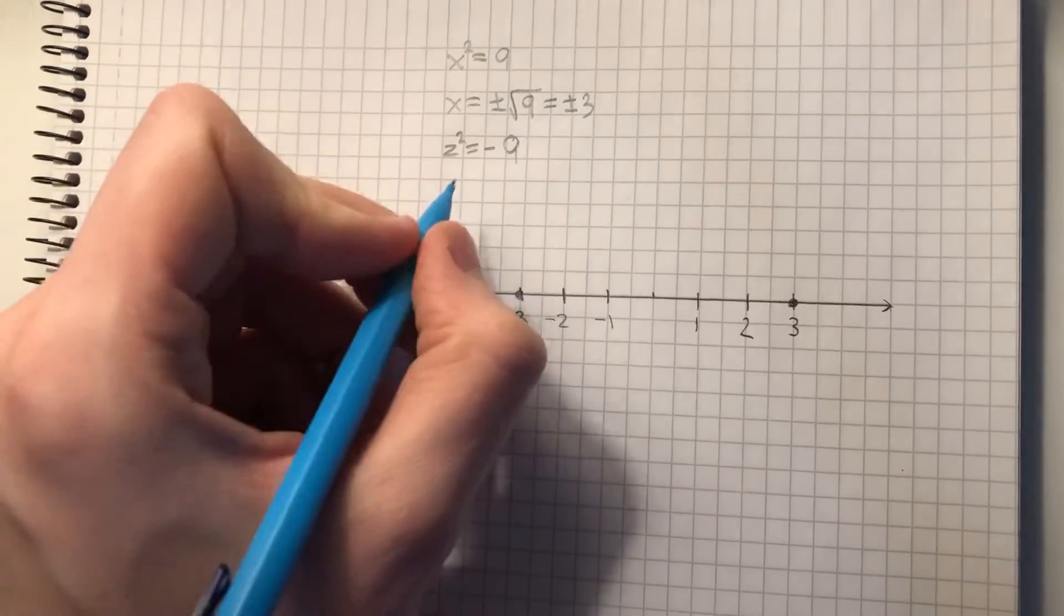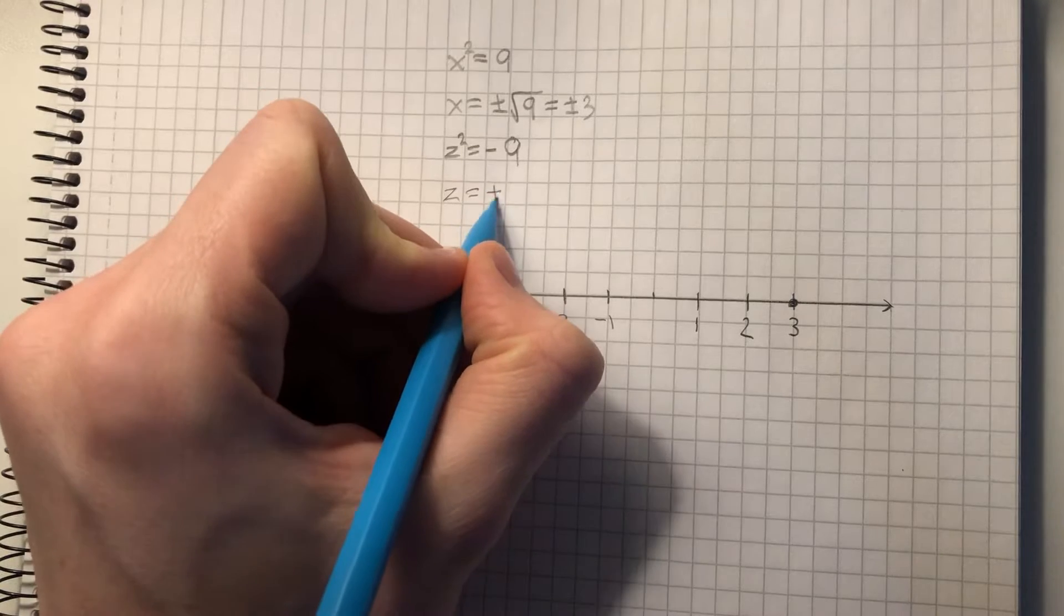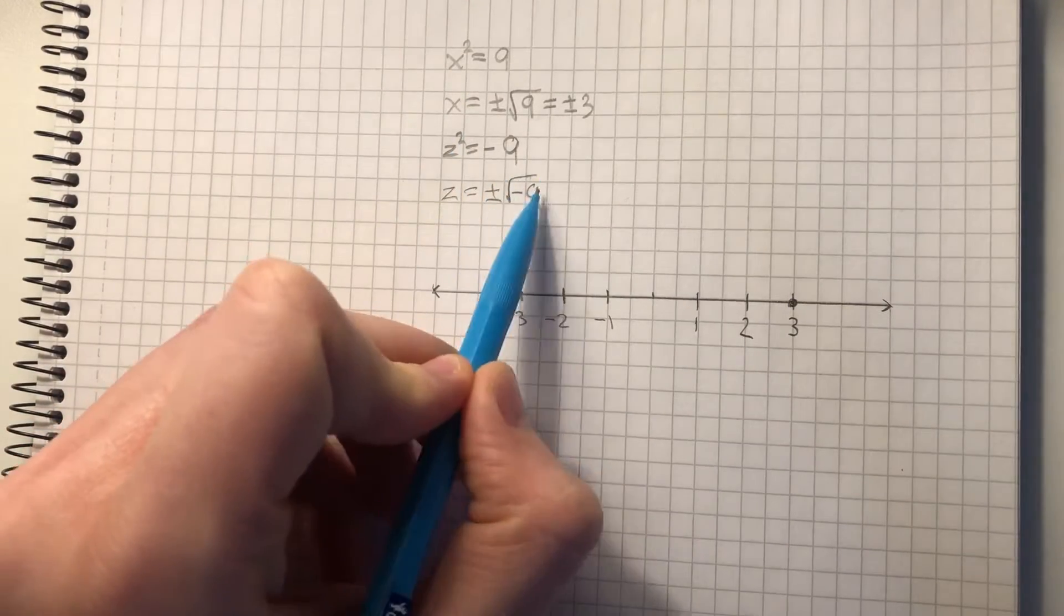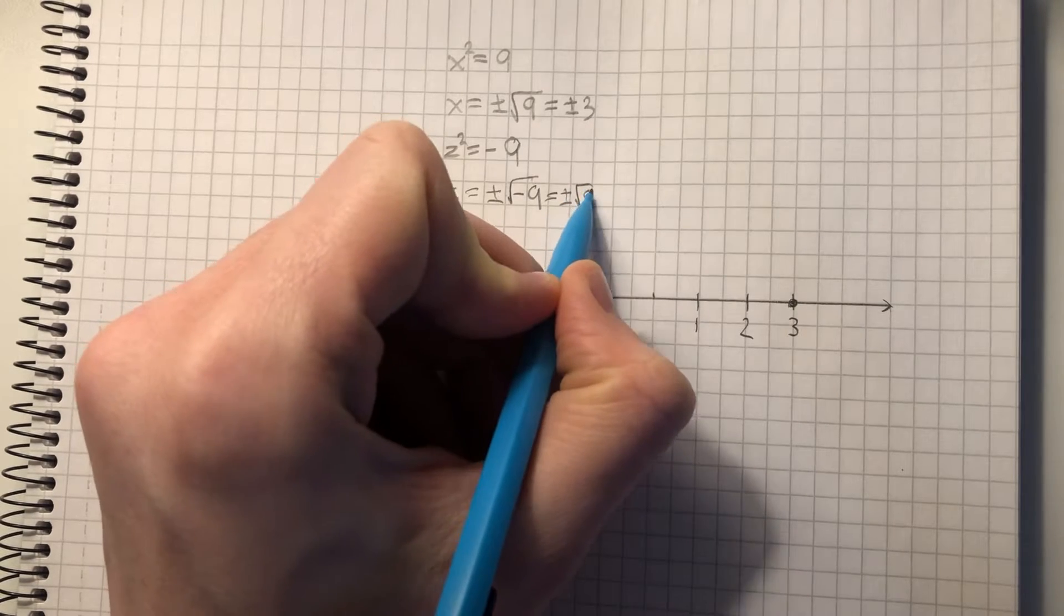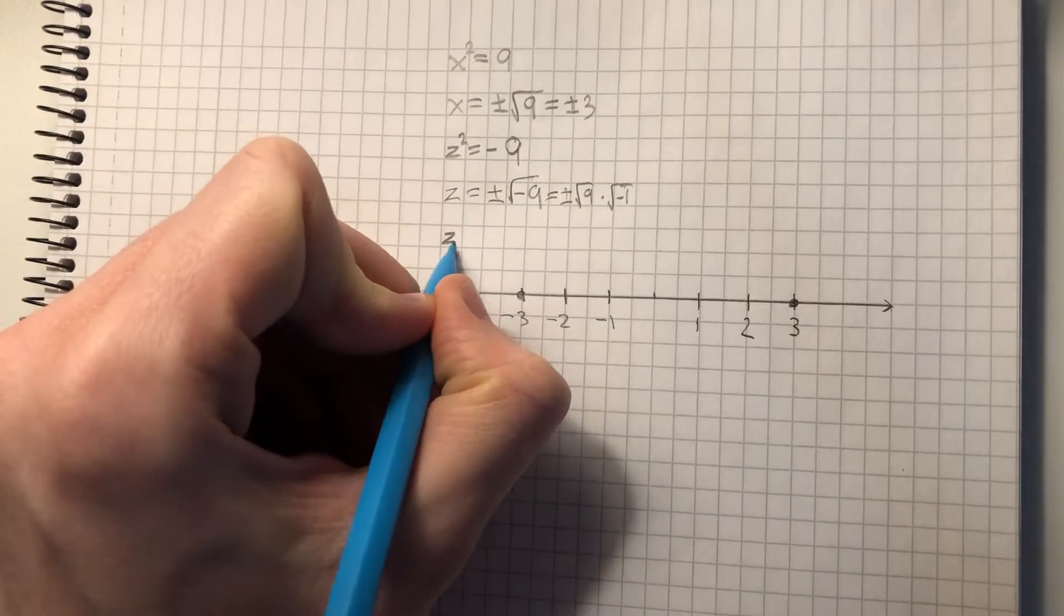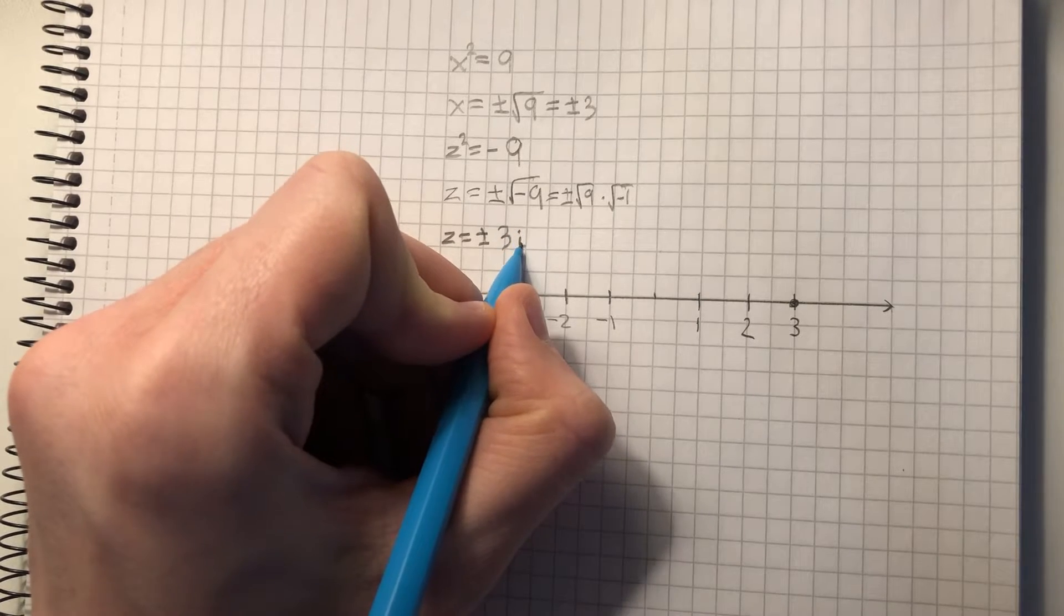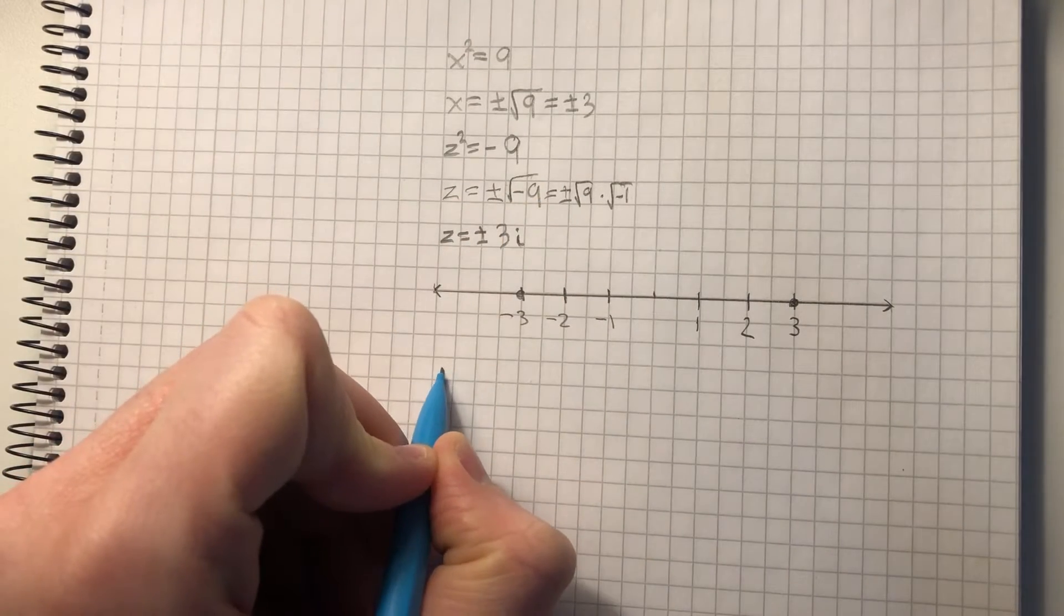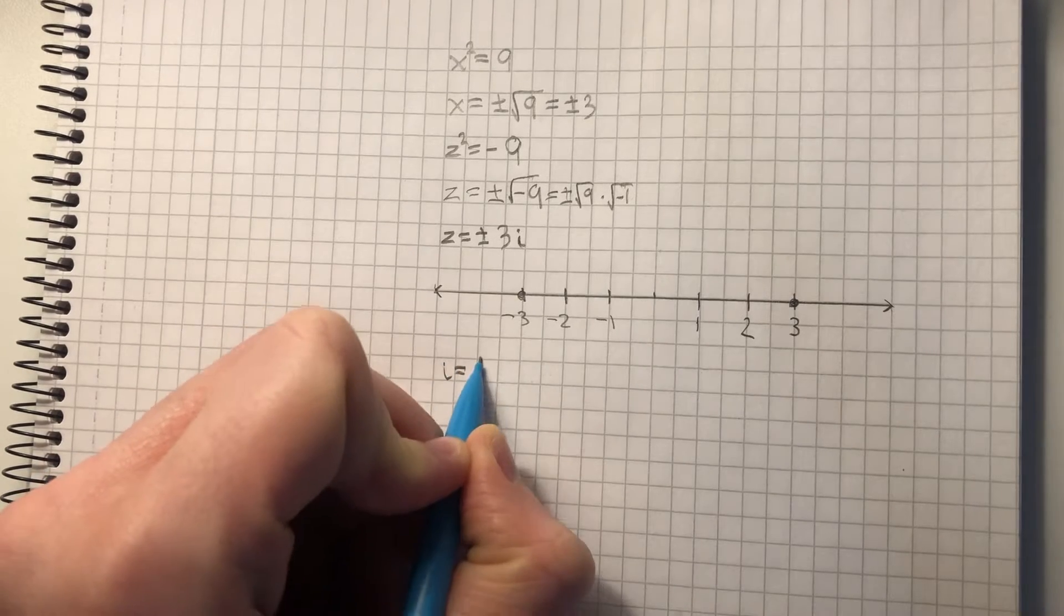We need to figure out something else. So let's say z equals plus minus the square root of minus 9. We want to get rid of this square root of minus 1. So we say plus minus square root of 9 times the square root of minus 1. This is plus minus 3 times i. The letter i is just the square root of minus 1.